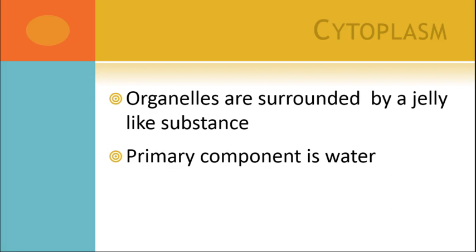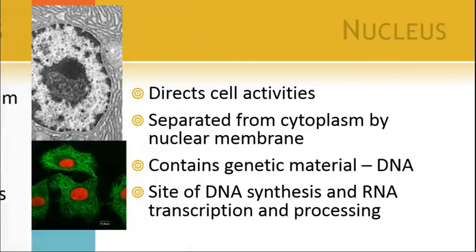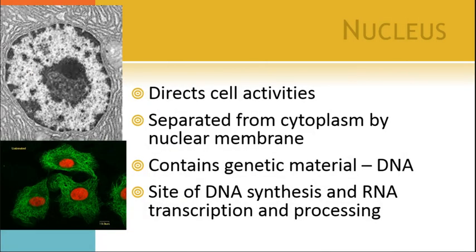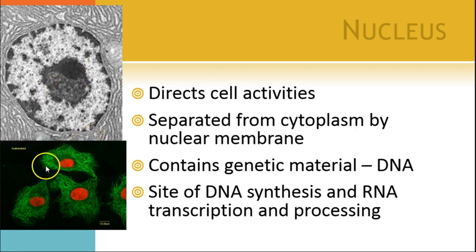Cytoplasm is the jelly-like stuff — its primary component is water. Now let's talk about organelles, starting with the nucleus because it's the most important — well, actually, everything is equally important. The nucleus directs cell activities. It's got the DNA — the genetic material — and it's the site of all DNA synthesis and RNA transcription and processing. It is its own little unique area, and you can actually see the cytoskeleton in this image — that green is all the cytoskeleton. Very cool stuff.